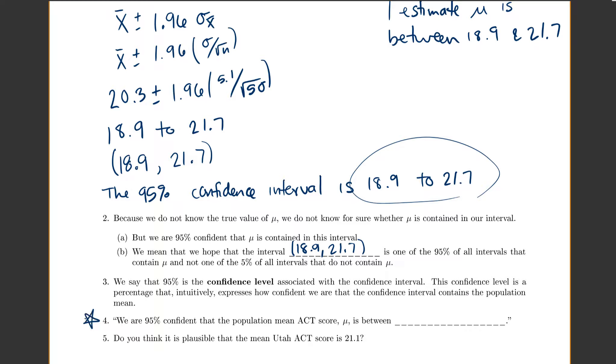Now, this number four, this is what you should be writing on every single problem that you do. Okay? Because I always ask you to interpret it on the exam. I will ask you to please interpret it. So, like, all of these things I'm saying here are important for the exam. So, my final interpretation will be, I'll say something like, we are 95% confident that my population mean ACT score mu is between 18.9 and 21.7.